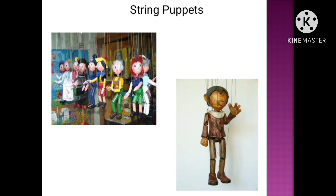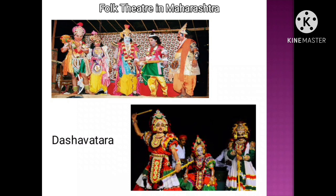Though the stage of puppetry is quite small, the puppets make use of light and sound in an ingenious way. There are four types of puppets used in Katputli shows: wooden puppets, shadow puppets, string puppets, and hand puppets.